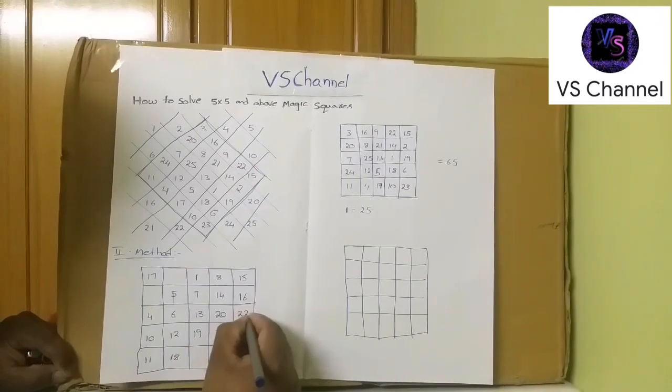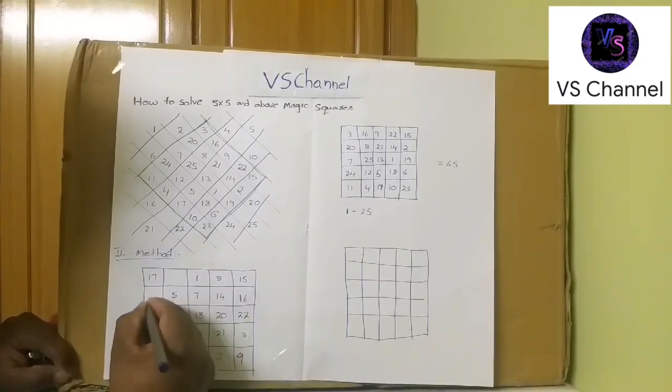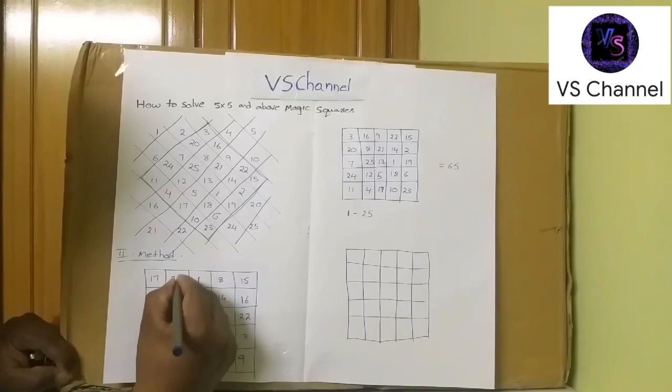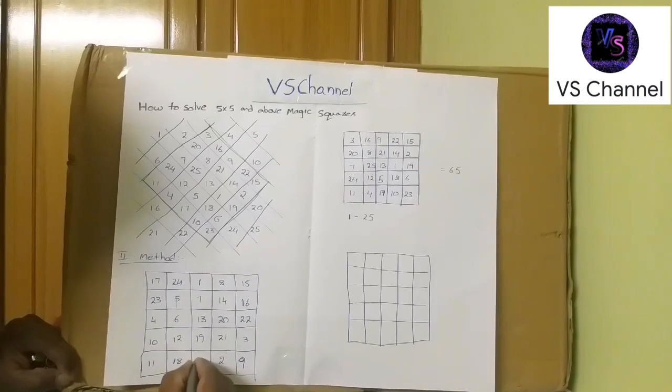So 18, 19, 20. So 21 we need to represent, which is already filled. So 21 we represent in the bottom. 21, 22. We come out of the cell. 23 we represent here, so we go in the same row. 23, 24, 25 we need to represent here, so we go in same column and we represent 25.